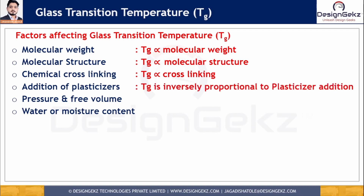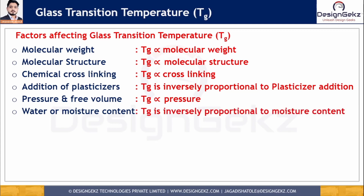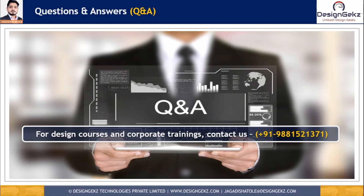Tg is inversely proportional to plasticizer addition. Increased surrounding pressure leads to decreased free volume and ultimately a higher Tg — Tg is directly proportional to pressure. For moisture or water content, increased moisture leads to formation of hydrogen bonds with polymeric chains, increasing the distance between chains, increasing free volume, and decreasing Tg — Tg is inversely proportional to moisture content. So this is all about the glass transition temperature. Stay tuned with Design Gigs for such learning videos. Thank you.